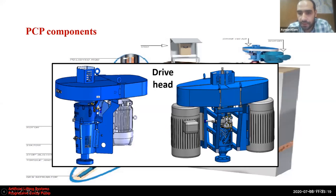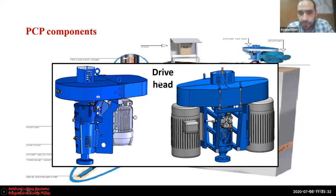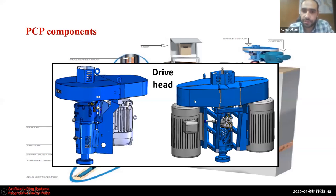The drive heads shown in this photo are of direct drive type deploying electrical motors. One is a single drive head, and another is a dual drive head using two motors for more horsepower in high torque applications. Some other types use hydraulic motors and are known as hydraulic drive heads. Each drive head must have some means to transmit the rotary motion from the motor sheave to the drive head sheave, which is connected to the polished rod — either using sheaves and belts or a gear transmission system.